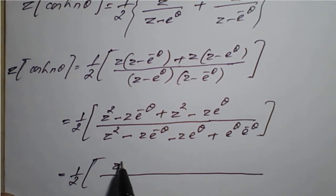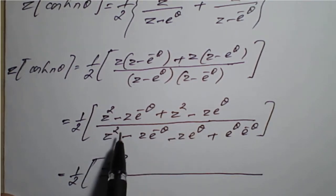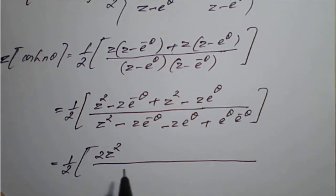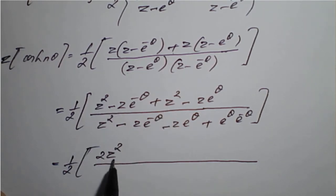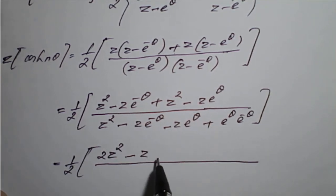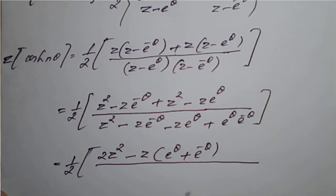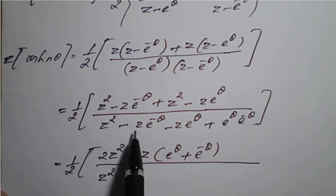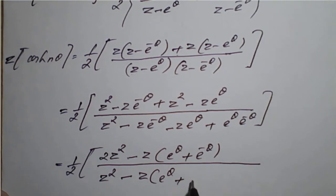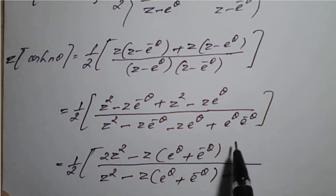Simplifying the numerator: z² + z² = 2z². Taking −z common from the remaining terms gives −z(e^θ + e^(−θ)). In the denominator, similarly we get z² minus z(e^θ + e^(−θ)) plus 1. Since e^θ · e^(−θ) = e^0 = 1.